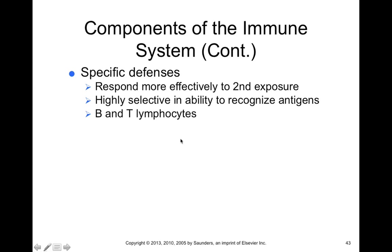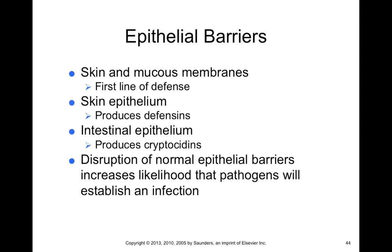Specific defenses are highly selective and can only respond to one specific type of antigen. They involve the B and T lymphocytes, which we'll discuss in more detail. This is referred to as learned or adaptive immunity because these defenses develop upon exposure to a new foreign antigen.